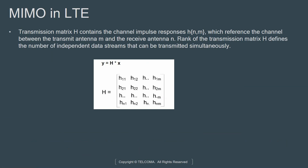The transmission matrix H contains the channel impulse response H_N,M, where N represents the transmitted antenna and M represents the receive antenna. The rank of the transmission matrix H defines the number of independent data streams that can be transmitted simultaneously. So Y equals HX, where H is the channel information matrix. This matrix is derived based on feedback that the UE gives to the eNodeB, or it is derived in the downlink direction using cell-specific reference signals that the user is able to decode.